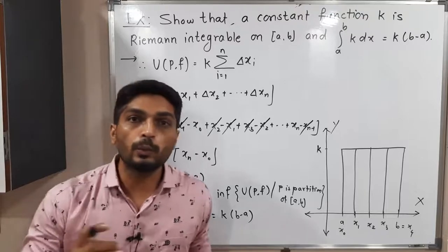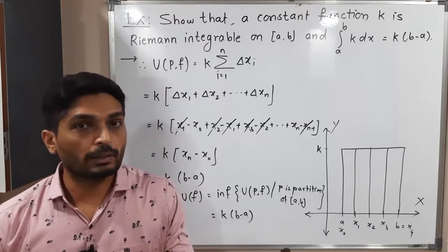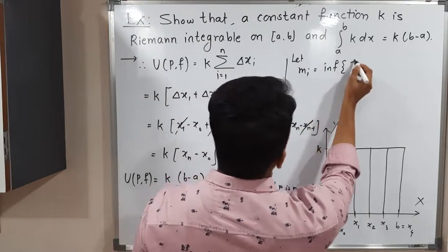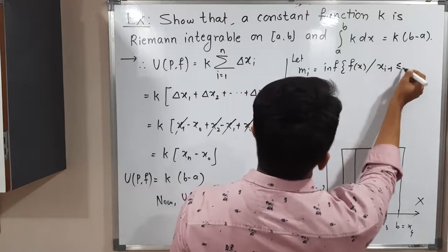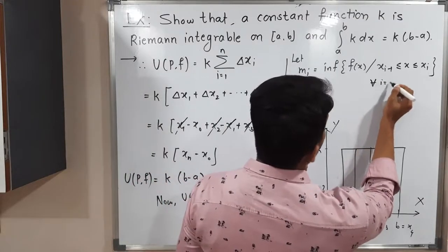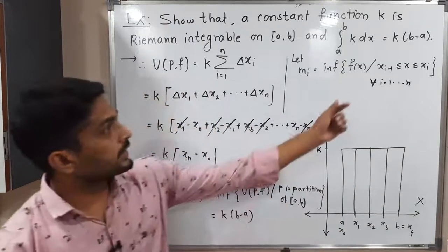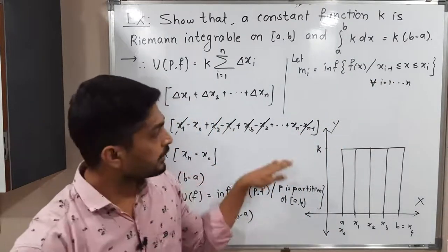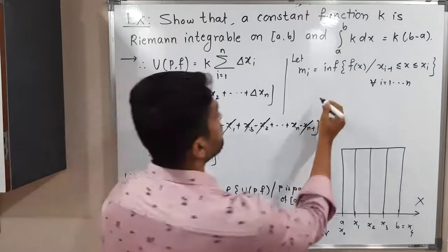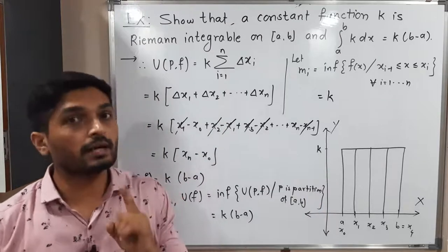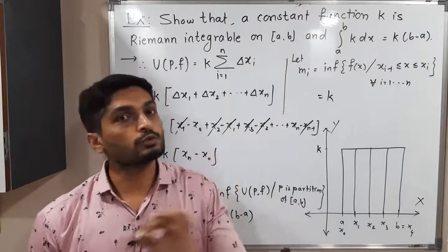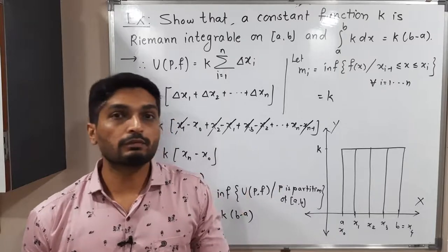Now let us work on the lower integral. To get the lower integral, we first define small mᵢ. For all i from 1 to n, mᵢ = inf{f(x) : xᵢ₋₁ ≤ x ≤ xᵢ}. Since the function is constant, for any point the function has the fixed value k, so its infimum is also k. Therefore mᵢ = k for all i from 1 to n — that is, m₁ = m₂ = ... = mₙ = k.